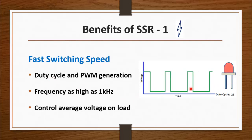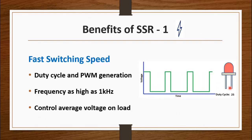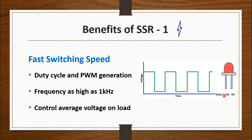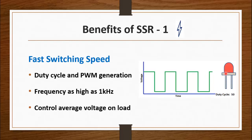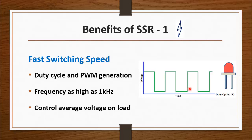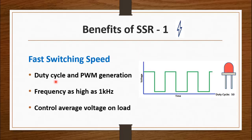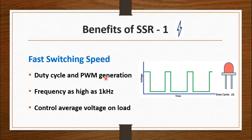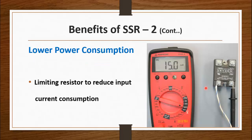For example, if you increase the duty cycle you will be applying a higher average voltage to the load, and if you reduce the duty cycle you apply a reduced average voltage to the load. In order to control the speed of a motor, you can use the SSR to change the duty cycle. You can also generate pulse width modulation for some loads because of the fast switching speed of the SSR.